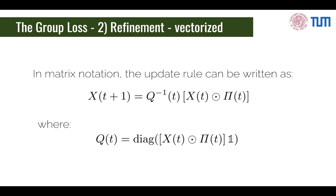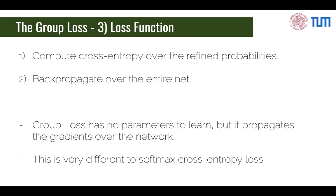Finally, we compute the cross-entropy loss function on these predictions and backpropagate the gradients over the network. Despite our method having no parameters to learn — there is no learnable matrix here — its gradients can be computed to the previous layers of the neural network, forcing the network to build embeddings that not only classify images correctly, but also generate very similar embeddings for images belonging to the same class. This is totally different from softmax cross-entropy loss that considers every image in isolation.